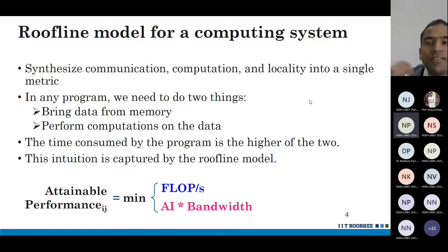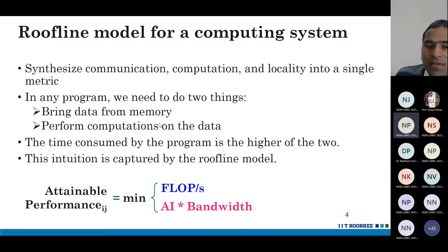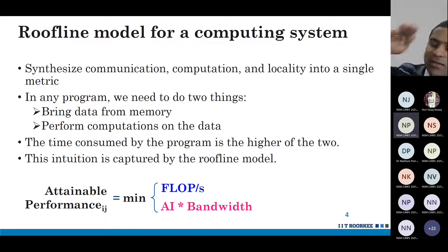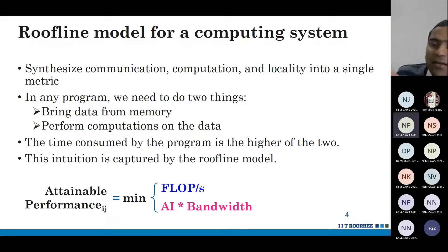The roofline model is a tool for performance modeling of a system. In any program we need to do two things: bring data from memory and then perform computations on the data. The time taken by any application will be the higher of those two. The roofline model tries to capture this exact intuition — it tells you what is the maximum performance this computing system can provide.